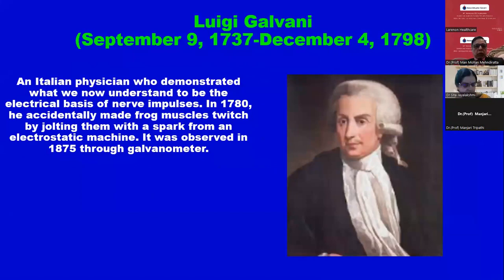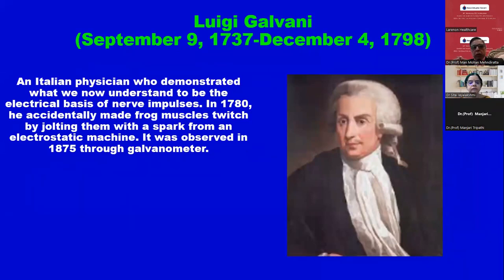An Italian physician demonstrated what we now understand to be the electrical basis of nerve impulses. In 1780, he accidentally made frog muscles twitch by jolting them with a spark from an electrostatic machine. This was observed in 1870 through a galvanometer. Many of you know that hind limb extension in epilepsy is used to find out the effectiveness of anti-seizure medicine in focal epilepsy.